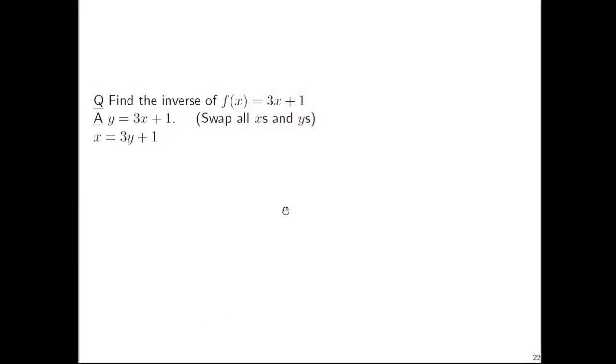Everywhere there's an x, write a y instead. Everywhere there was a y, write an x instead. So y = 3x + 1 becomes x = 3y + 1. Now we need to solve for y. To solve for y here, subtract 1 on both sides and then divide both sides by 3. I prefer switching the two sides of the equation to have y = (x - 1)/3. So the inverse function is f^(-1)(x) = (x - 1)/3.